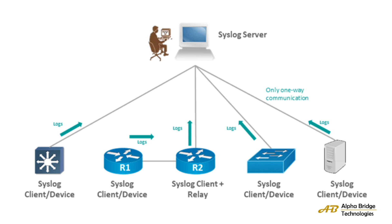We will see a syslog server and network devices connected to the server. The device may be any device present in the network — in this example, there is a Layer 3 switch, a router, a Layer 2 switch, and a server. These devices send the logs to the syslog server, which stores them. This communication is one-way, because the devices send logs to the server, but the server does not send any messages or requests back to the devices. There is only one-way traffic in syslog.